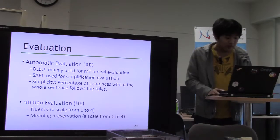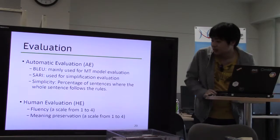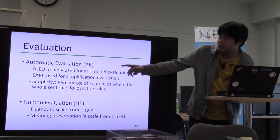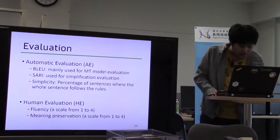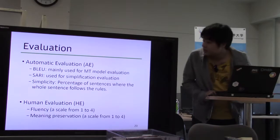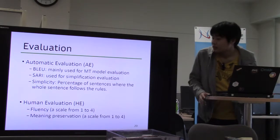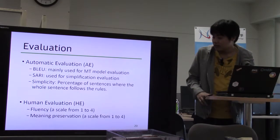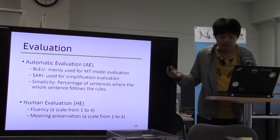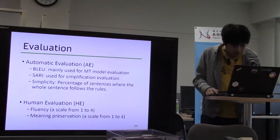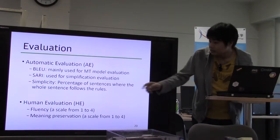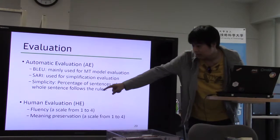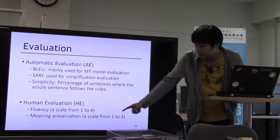In evaluation, we used both automatic evaluation and human evaluation. In automatic evaluation, we used BLEU score and simplicity. In this study, simplicity is defined as the percentage of sentences where the full sentence follows the minimum grammar rules. We also evaluated fluency and meaning preservation.